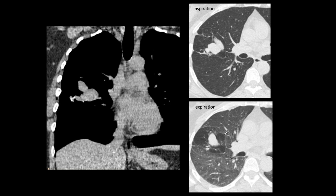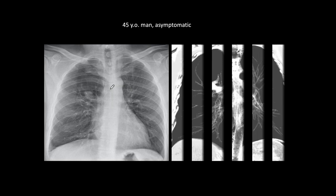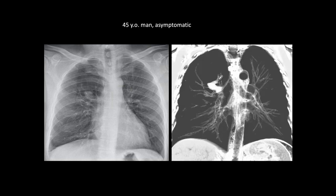If you want more confirmation you can do a bronchoscopy to eliminate any other possible cause. Another case: a 45-year-old asymptomatic man. At first glance you see a sort of emphysema in the right upper lung — a hyperlucent area compared to the left with very limited vasculature. But in the middle there is a nodule, which represents mucus impaction. You are not going to make the diagnosis on the plain film, but you can suspect it and confirm with CT. There you have the absent bronchus and mucus impaction inside, and the hyperlucency of the upper segment — that is congenital bronchial atresia.